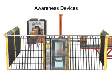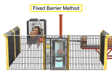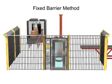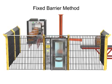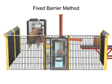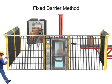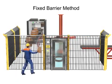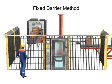Guarding methods are used to prevent unauthorized access to the work envelope. The simplest is known as the fixed barrier method, such as a fence or wall. The physical barrier is put around the work area and is configured in such a way that prevents access through, over, or around without a special key or access code.